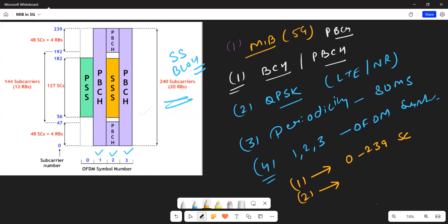On the second OFDM symbol, it's transmitted over 0 to 47 subcarriers and 192 to 239. If you remember this diagram, you can easily answer these questions in interview. These are very common and basic questions.